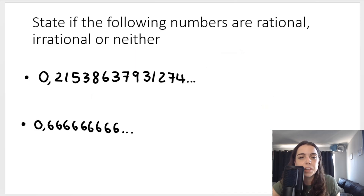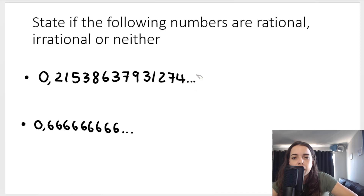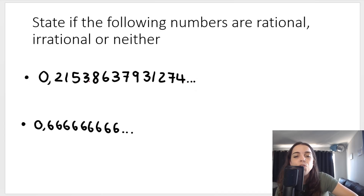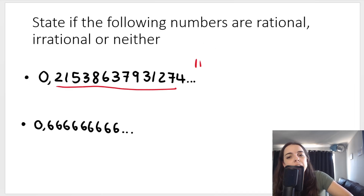What about these two? This decimal is going on and on, as indicated by the dots. It's kind of obvious that it's repeating in a random way — you cannot write this as a fraction. It hasn't got a repeating pattern, so this is irrational.